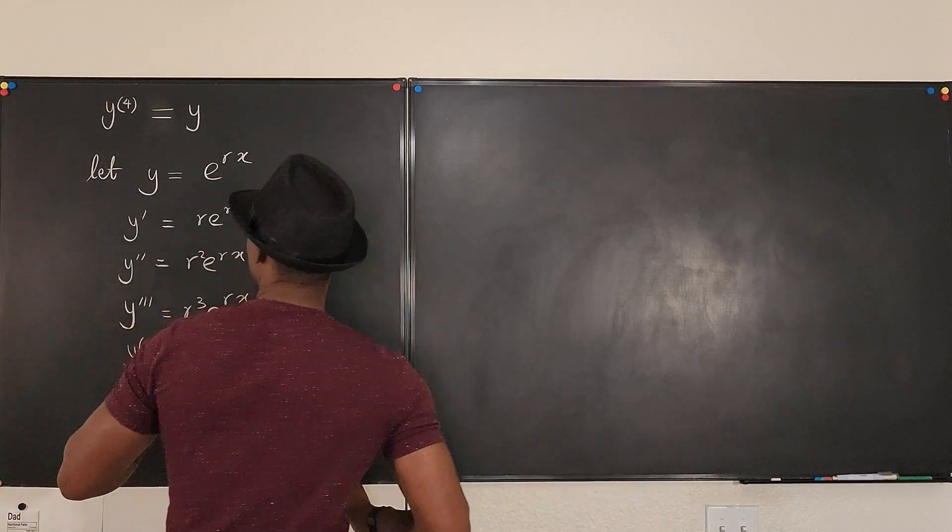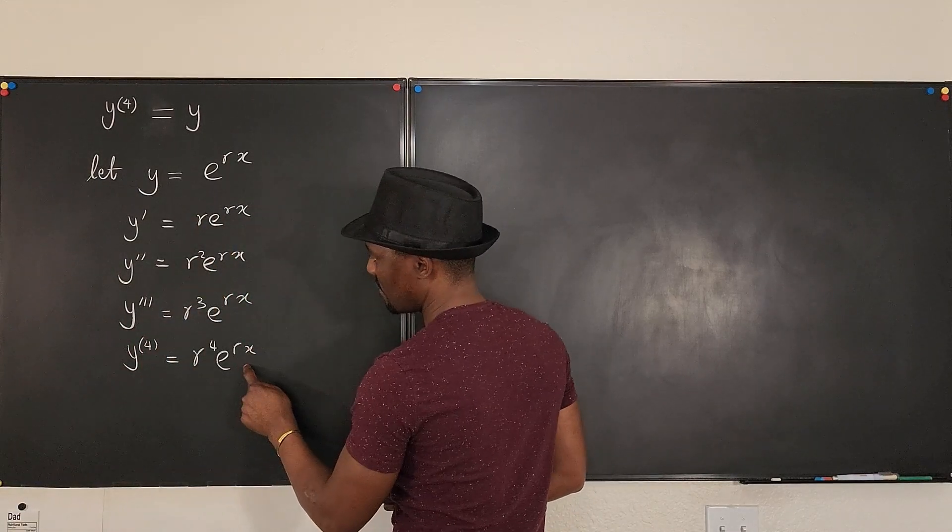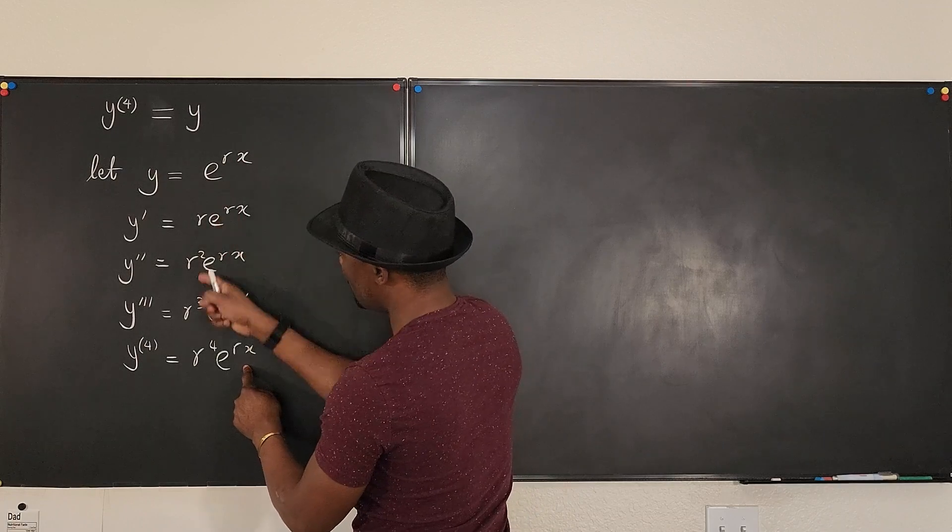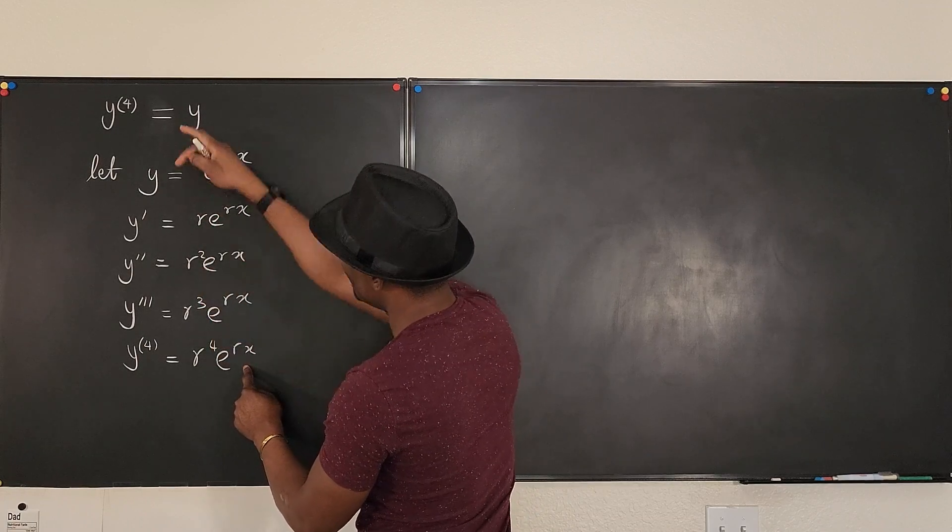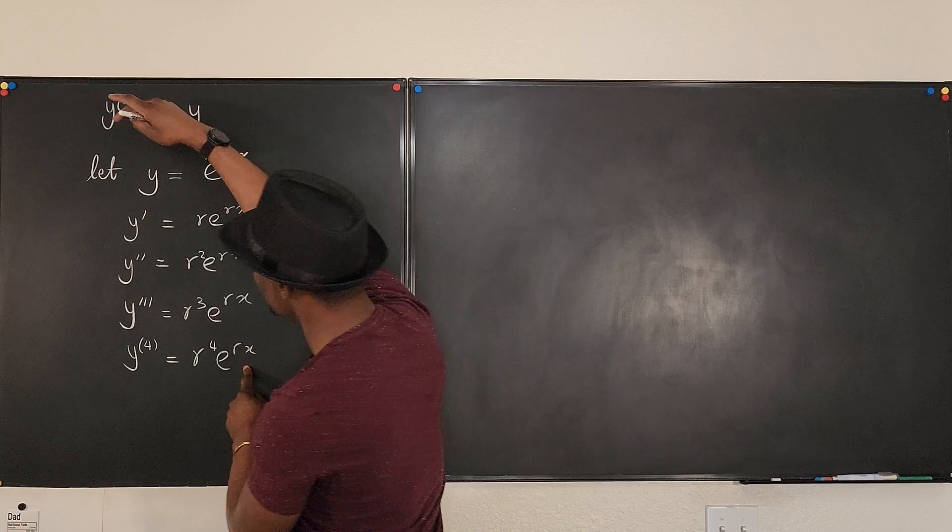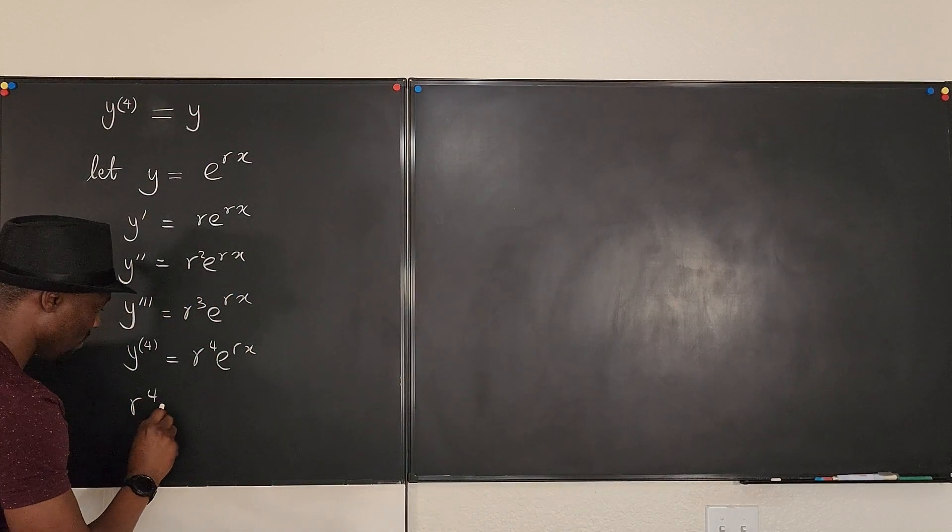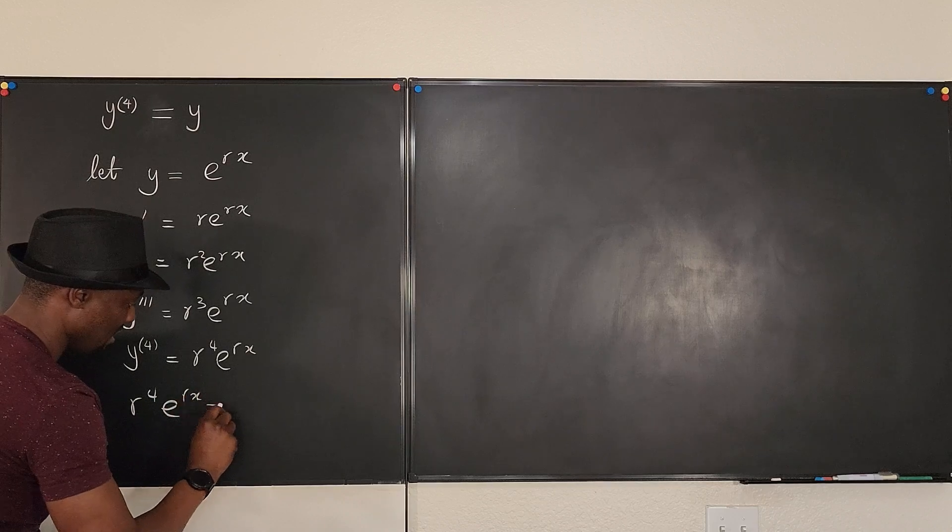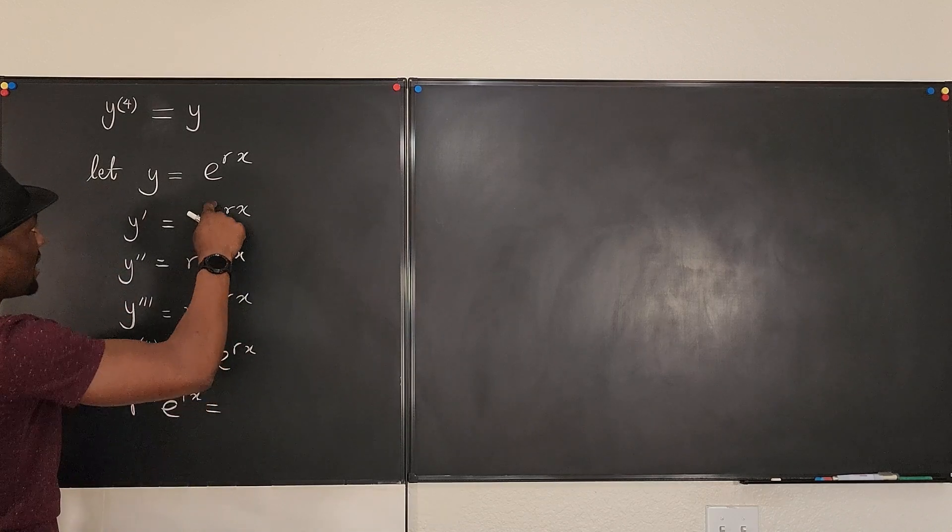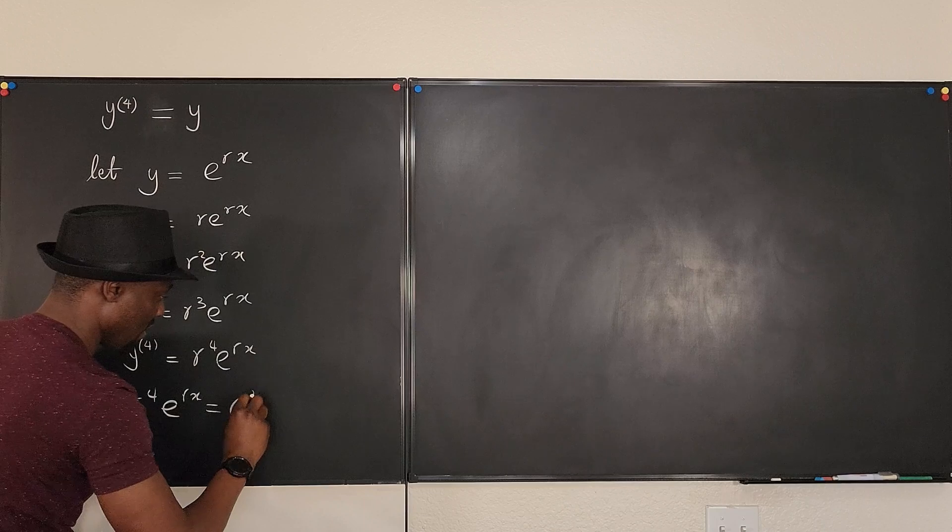So if we go back here, we only need this one. We don't need the rest. So we just need to say, if we move this over here, we can say now that r to the fourth e to the rx is equal to y, which is e to the rx.